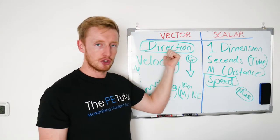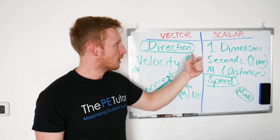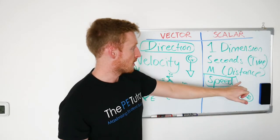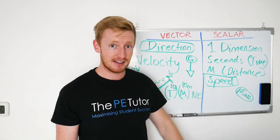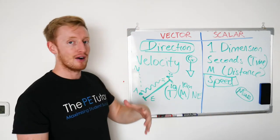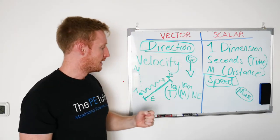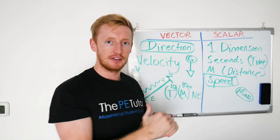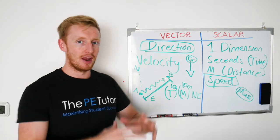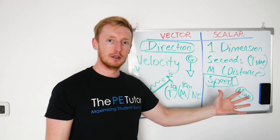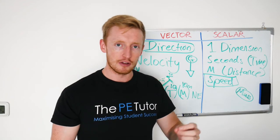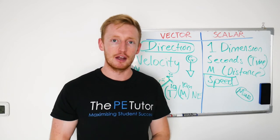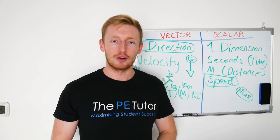So to summarise: vector is two-dimensional and relies on direction, whereas scalar doesn't require direction — it's one-dimensional. Some examples of scalar are time, distance, speed, and mass. Some examples of vector could be acceleration, velocity, and the height that we jump to, because we're dealing with the upwards direction and the distance. Vectors come up in open environments in sport, and scalar quantities come up in isolated events, a lot of them in athletics. And that is a quick overview of the difference between vector and scalar quantities. I hope you enjoyed that and found it useful, and I look forward to seeing you again soon.